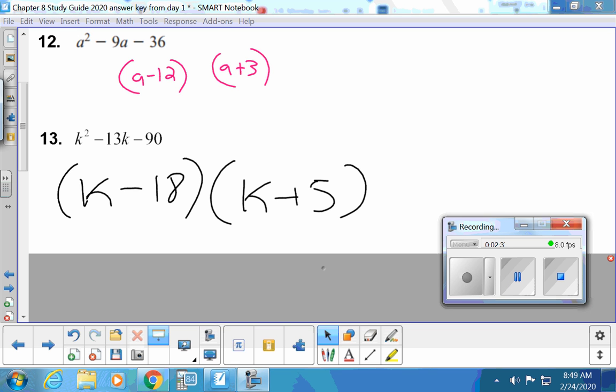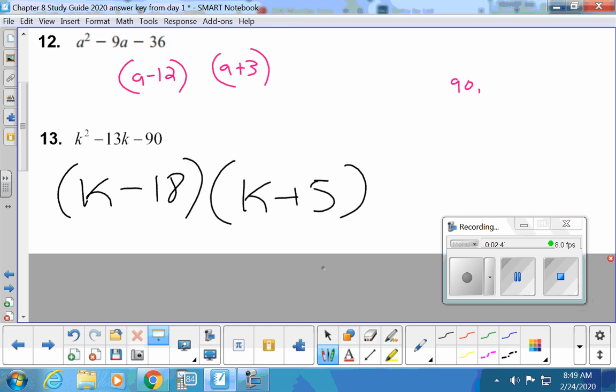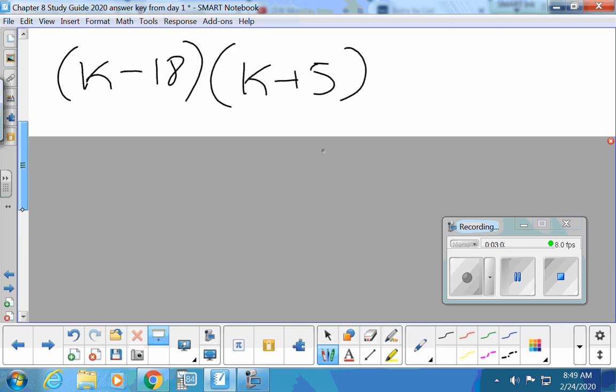All right, so the negative 90, this is a bigger number and a harder number to come up with the combinations. I have not seen a group yet make the brainstorm list, but I highly recommend that. 90 and 1 was not it. 10 and 9, not it. You can just keep experimenting. You end up being 5 and 18 if you make that 18 a negative, okay? Everybody okay with that one?